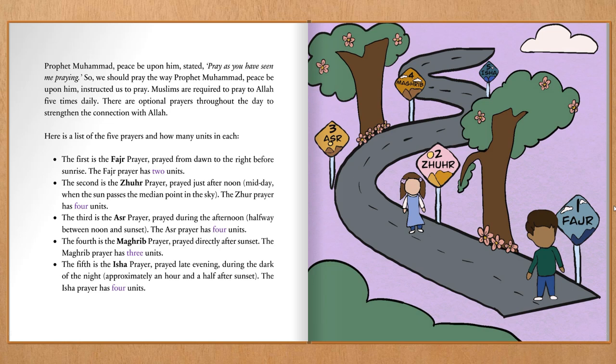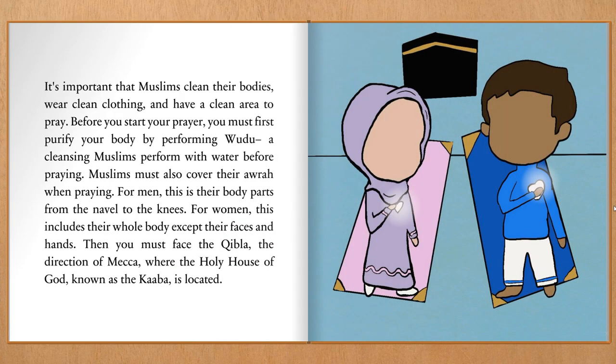Here is a list of the five prayers and how many units in each. The first is the Fajr Prayer, prayed from dawn to right before sunrise — it has two units. The second is the Dhuhr Prayer, prayed just after noon, midday, when the sun passes the median point in the sky — it has four units. The third is the Asr Prayer, prayed during the afternoon, halfway between noon and sunset — it has four units. The fourth is the Maghrib Prayer, prayed directly after sunset — it has three units. The fifth is the Isha Prayer, prayed late evening during the dark of the night, approximately an hour and a half after sunset — it has four units.